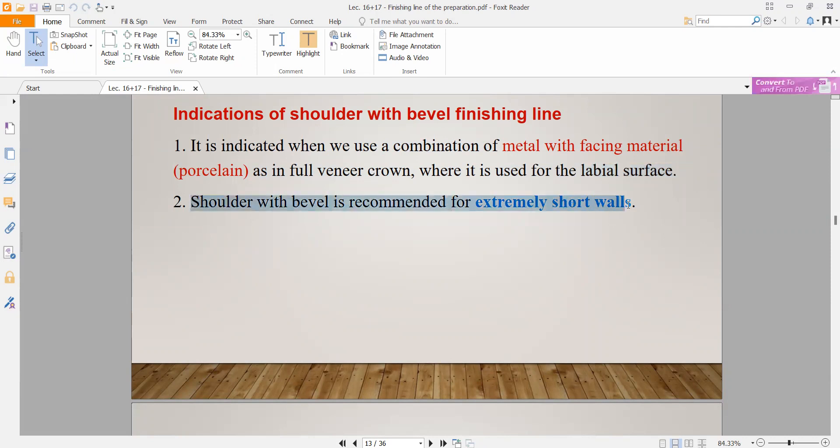Shoulder with bevel is recommended for extremely short walls. If the tooth is short, then the walls will be short, so in this case shoulder with bevel is indicated.